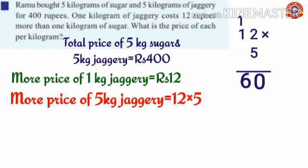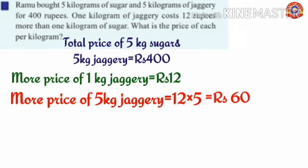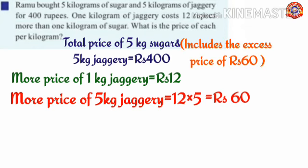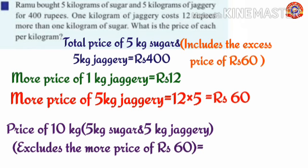The total price of 5 kg sugar and 5 kg jaggery is 400 rupees. In this 400 rupees, the excess price of 5 kg of jaggery is included. When this excess price of 60 rupees is excluded from 400 rupees, both sugar and jaggery will have the same price. So we need to find the price of 10 kilograms — which includes 5 kg sugar and 5 kg jaggery at equal price.